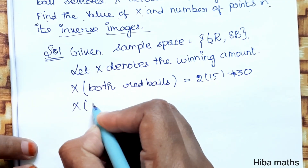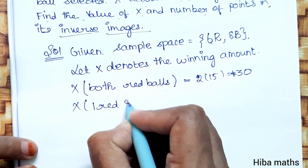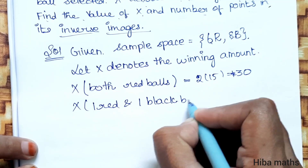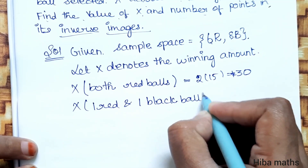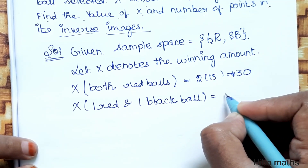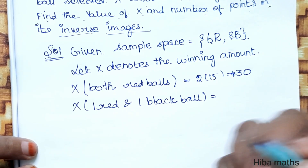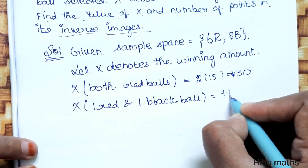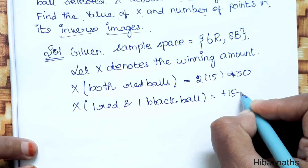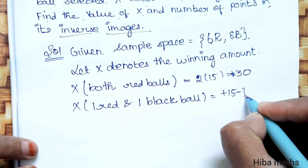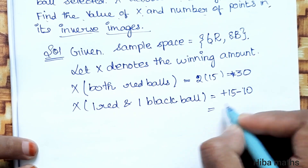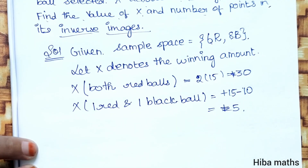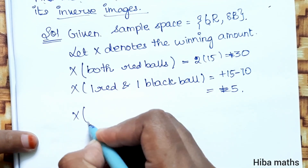Next, 1 red ball and 1 black ball. For the red ball we get 15 rupees, and for the black ball we lose 10 rupees. So 15 minus 10 = 5. Then x = 5 rupees.